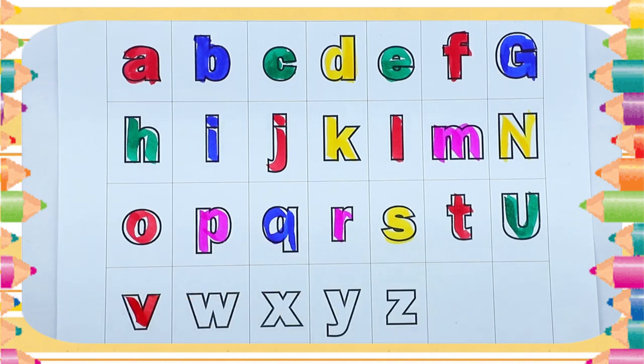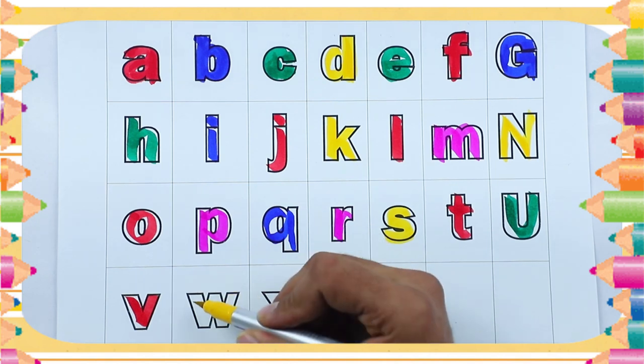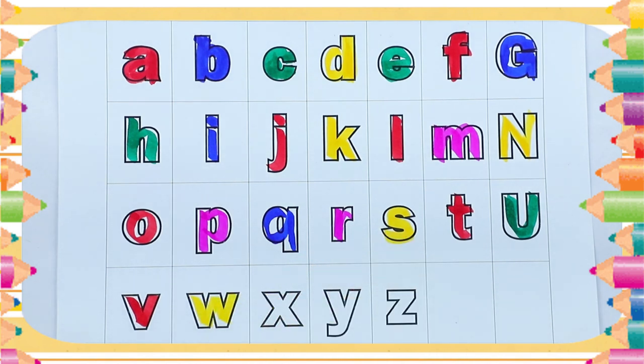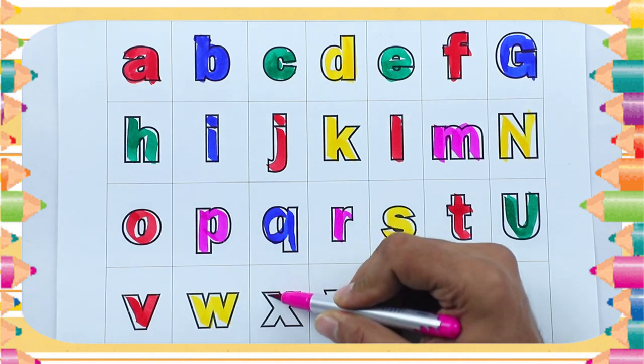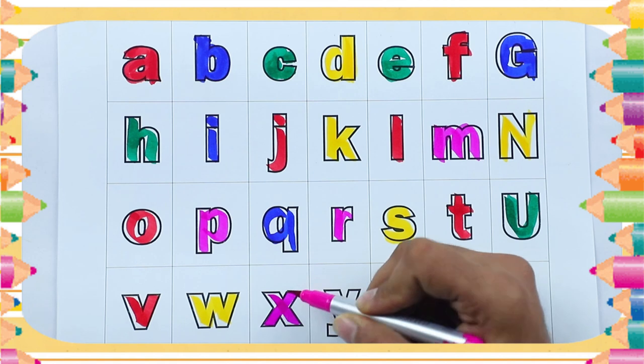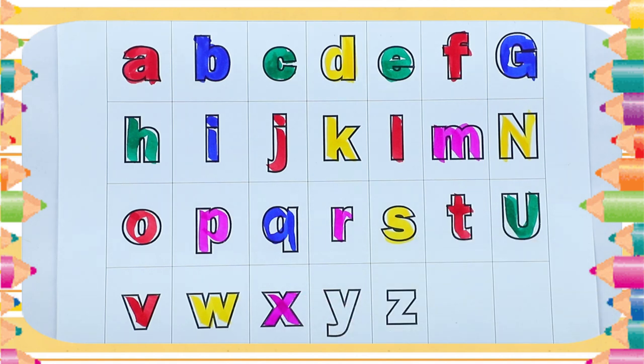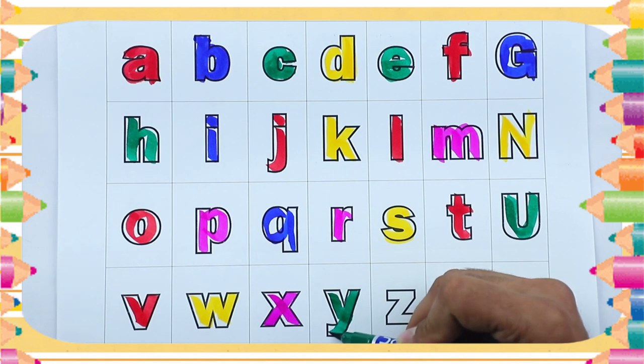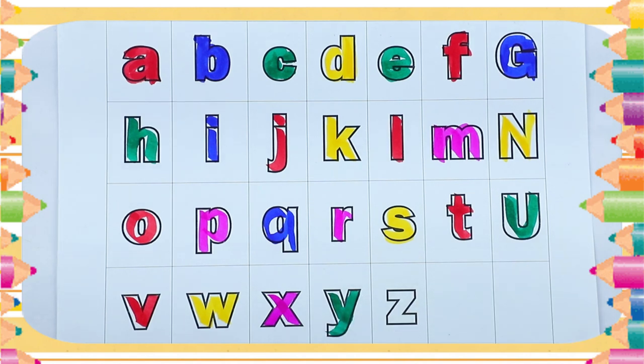Red color, small v. Red color, small w, w for watch. Small x, x for fox. Small y, y for yak. Red color, small z, z for zebra.